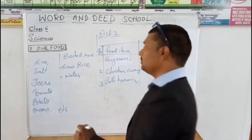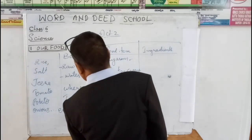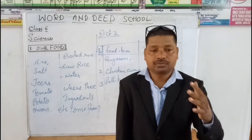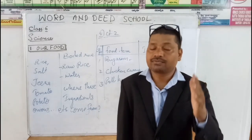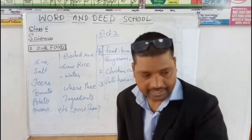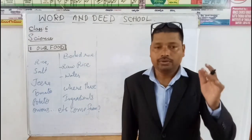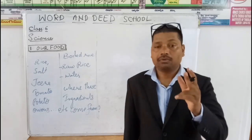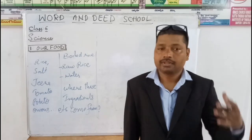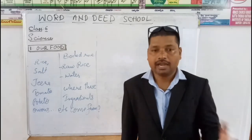Have you ever thought about where these ingredients come from? It will be easy for you to say that we get vegetables and fruits from plants, and eggs, milk, and meat from animals. You can find out the sources of ingredients — where do we get ingredients from? The sources are plants, animals, and others.